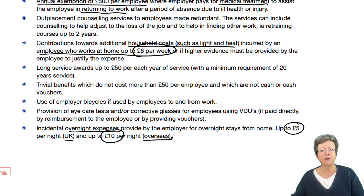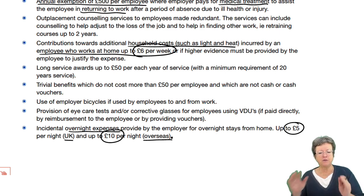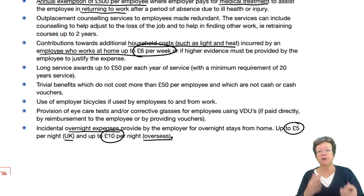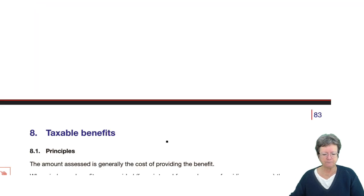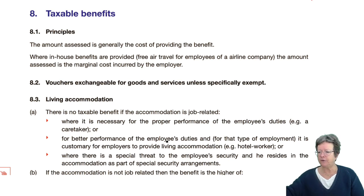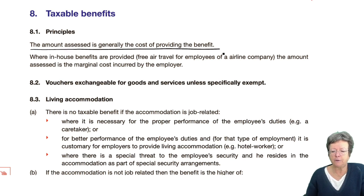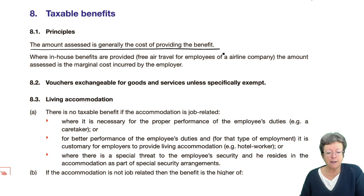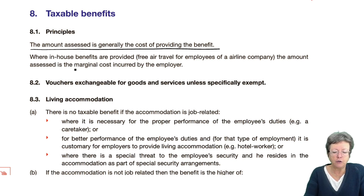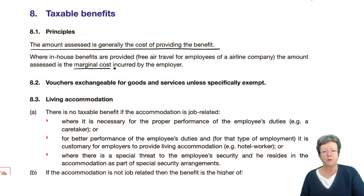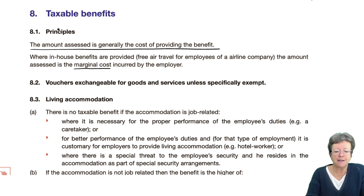If you want to pause the recording and read through those carefully — don't learn them as a list. Learn the benefits in kind that have calculations, and if something comes up that you haven't learned a calculation for, it's probably exempt. The amount assessed is generally the cost of providing the benefit. Where in-house benefits are provided, the amount assessed is the marginal cost incurred. Vouchers exchangeable for goods and services are taxable unless specifically exempt.